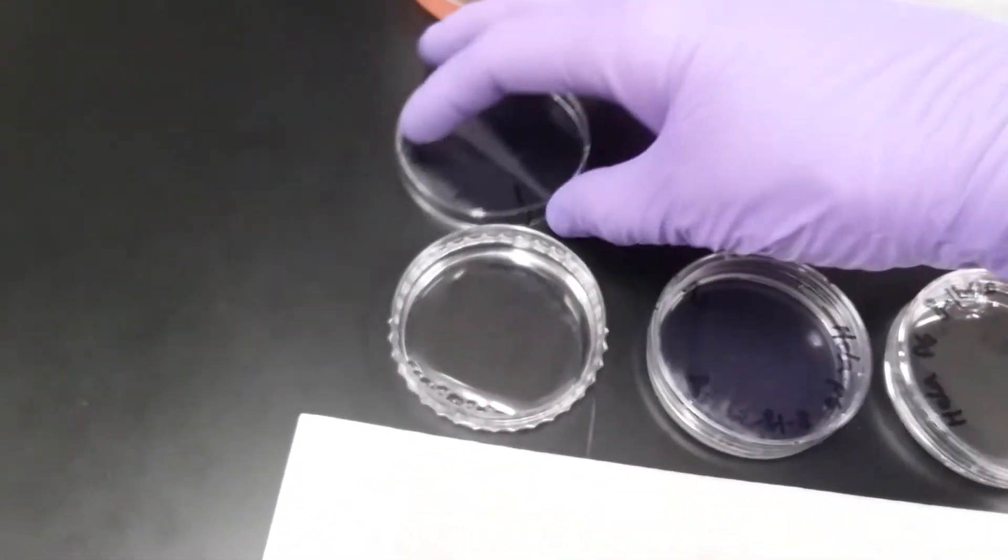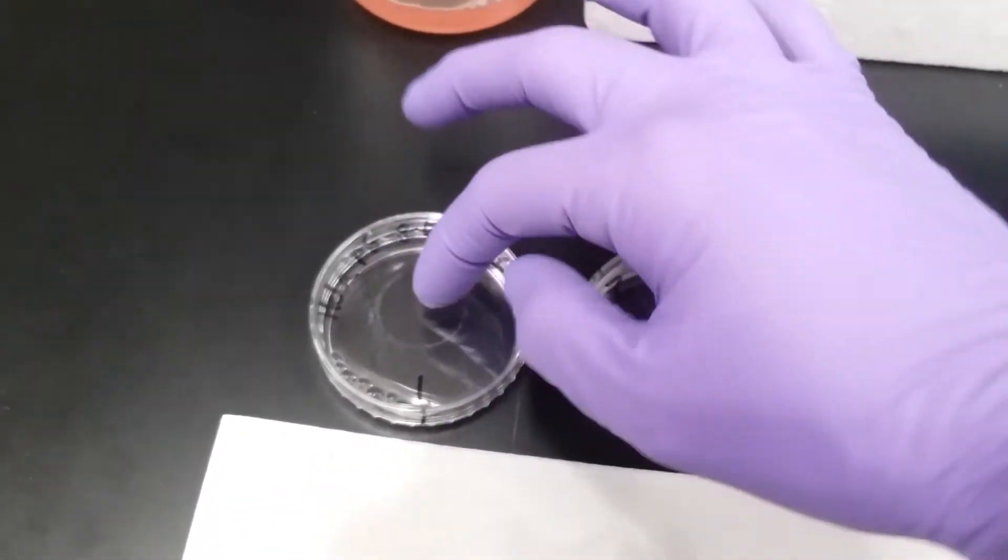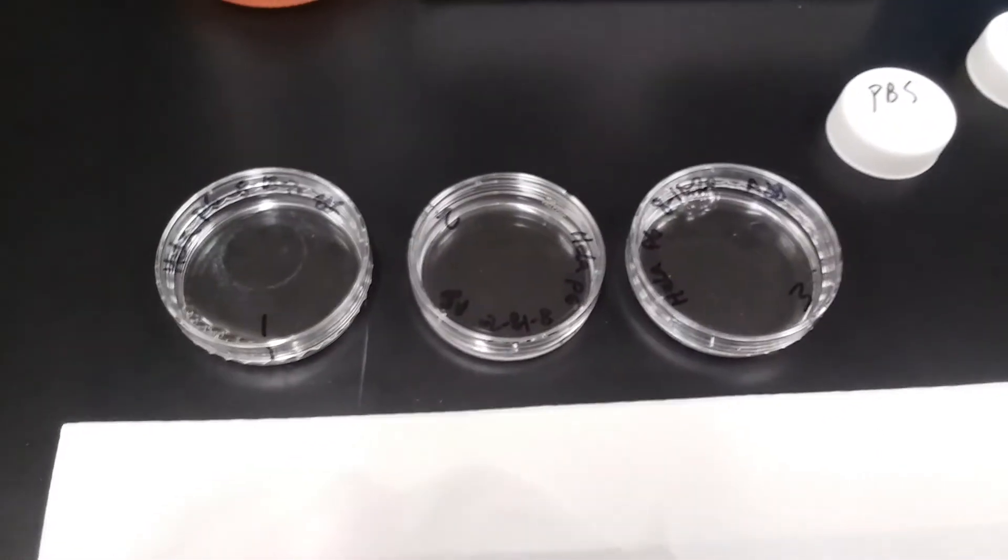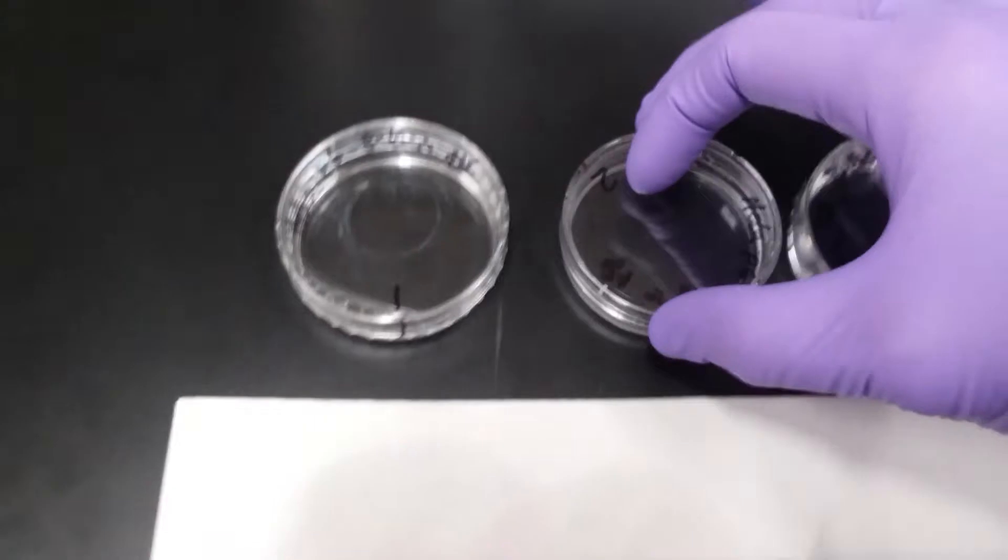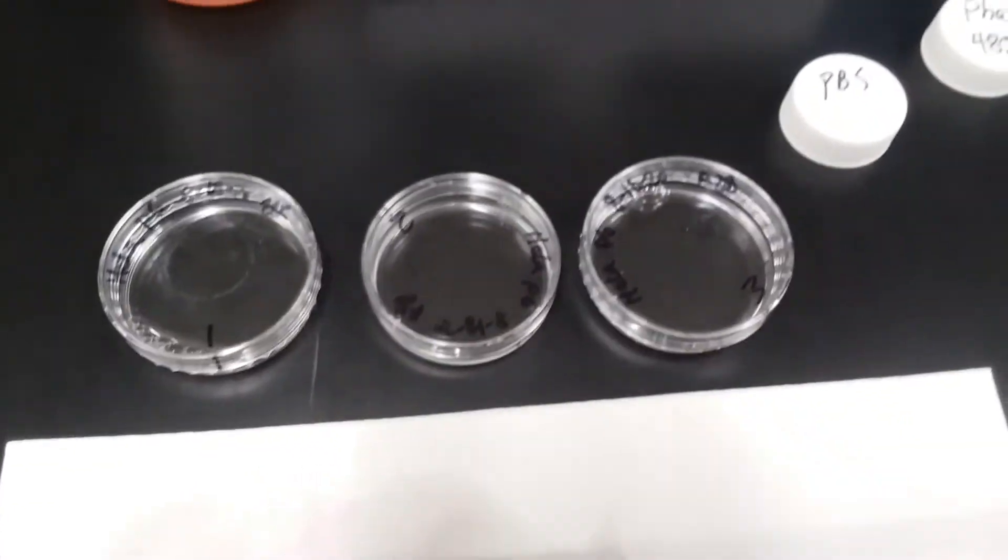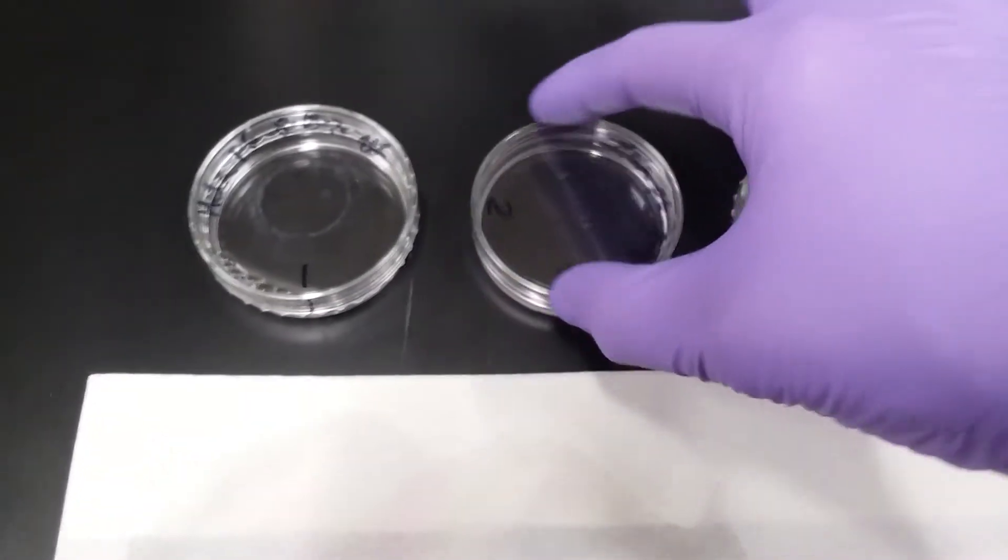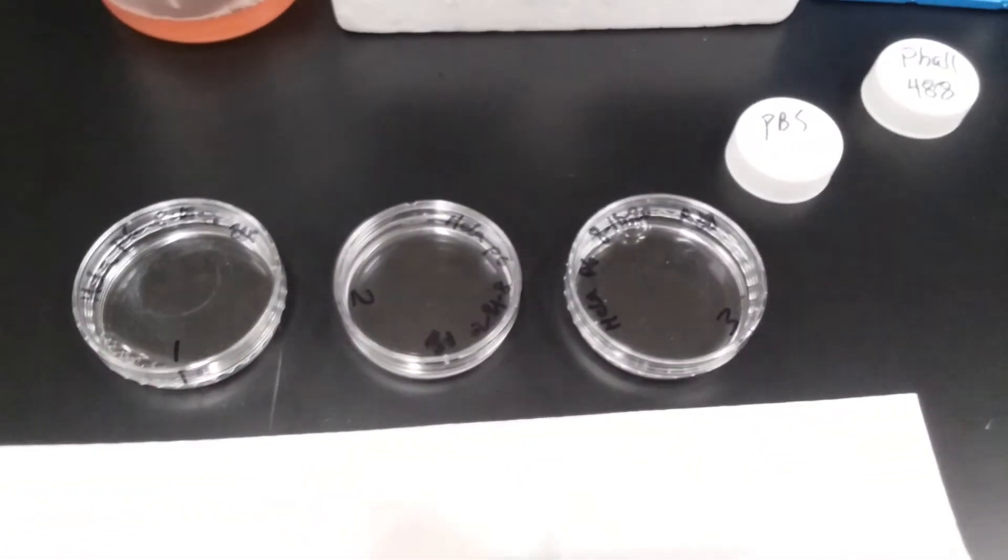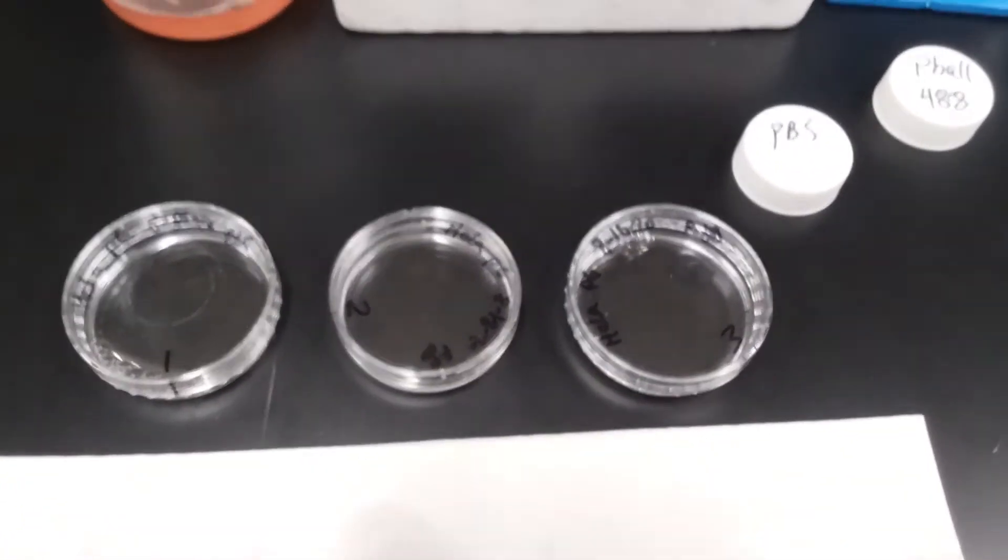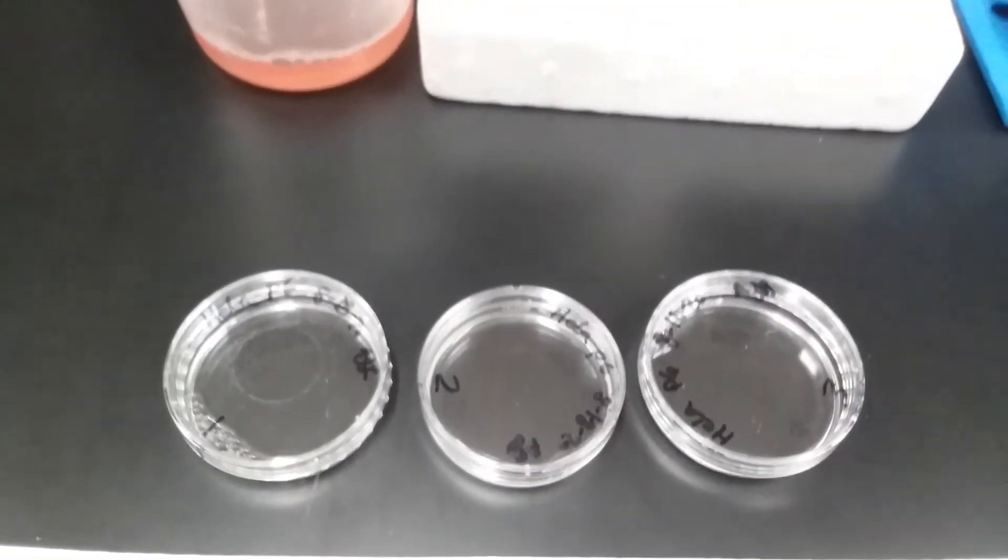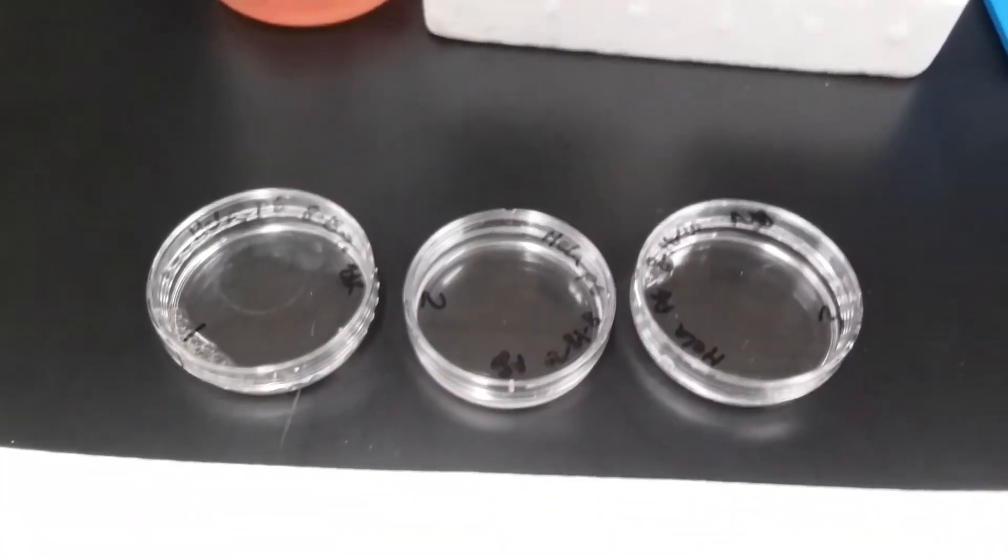Dish 1 is a control for permeabilization because it got formaldehyde and phalloidin but not triton. And dish 2 is my negative control to make sure that phalloidin isn't fluorescing on its own without being inside the cell because it got formaldehyde, triton, but no phalloidin. So I'm done with my experiment. I've now stained 3 dishes for cytoskeleton.